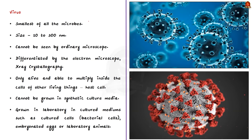Let's see what is a virus. Viruses are the smallest of all the microbes, ranging in size from 10 to 300 nanometers — typically about 100 nanometers. It is a tiny complex infectious particle and cannot be seen by an ordinary microscope. You can use either an electron microscope or even X-ray crystallography to view them.